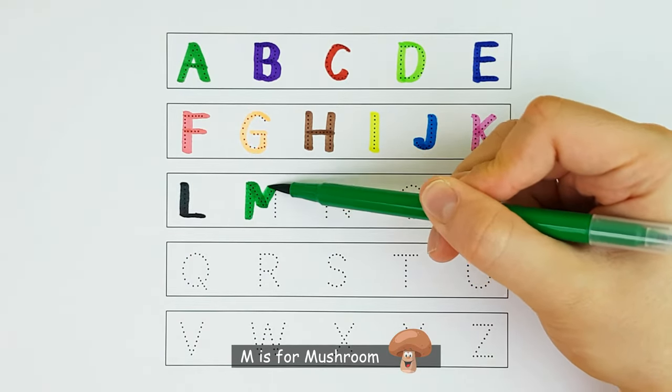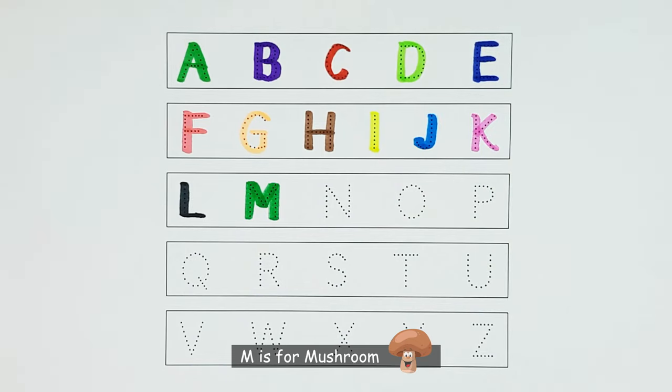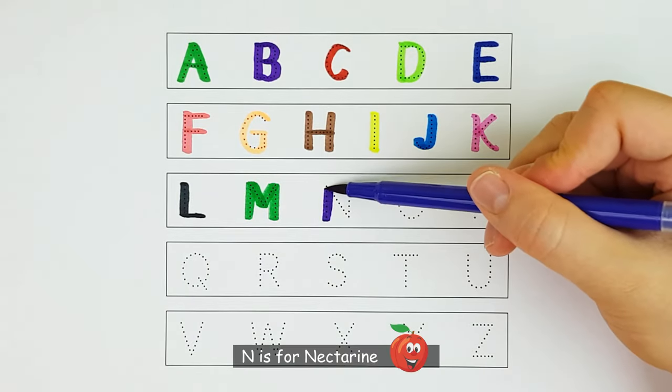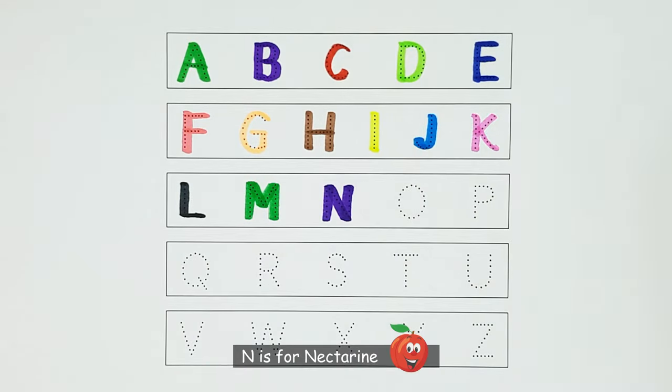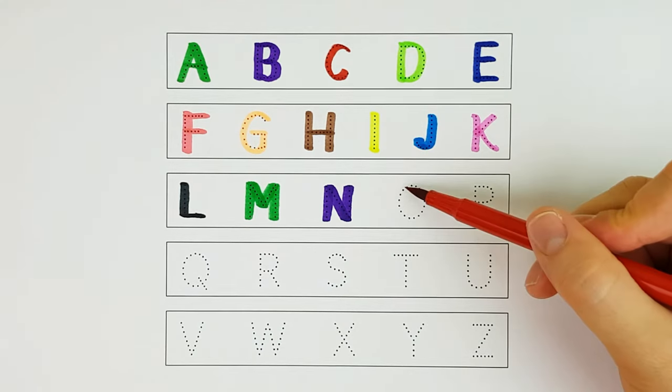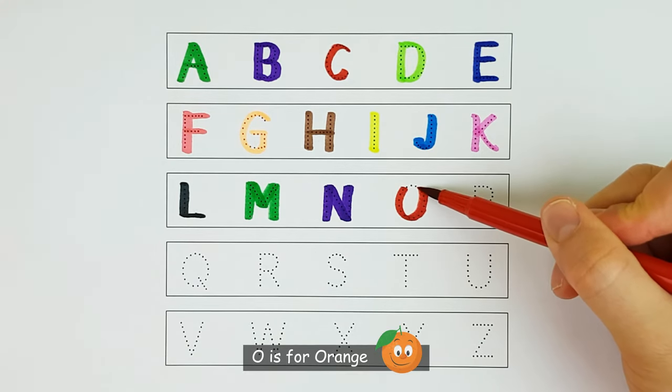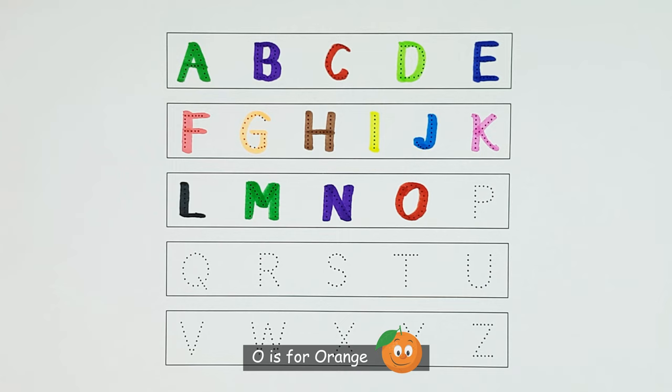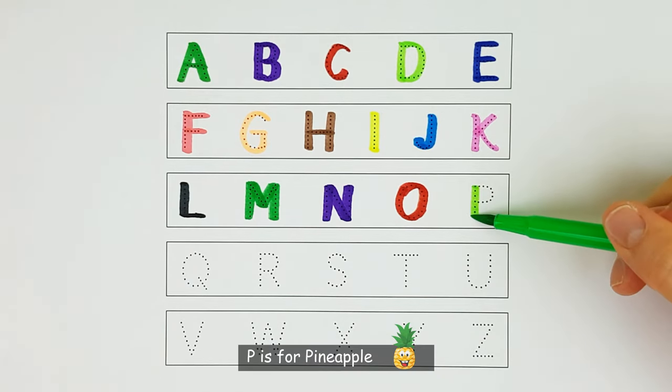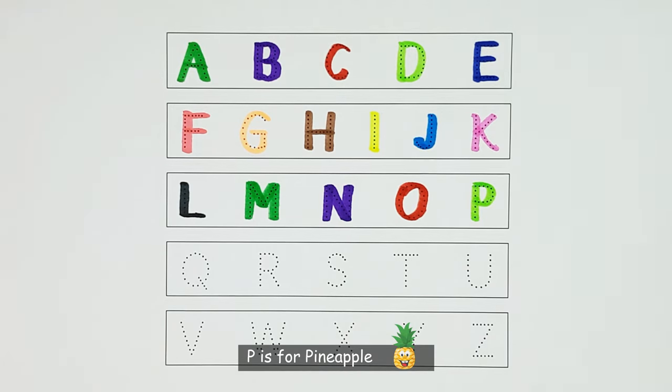M. M is for mushroom. M. N. N is for nectarine. N. O. O is for orange. O. P. P is for pineapple. P.